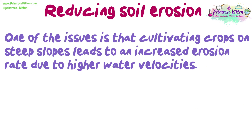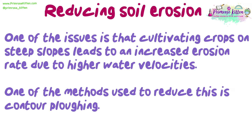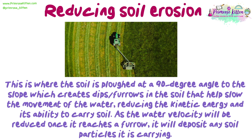One of the issues is that cultivating crops on steep slopes leads to an increased erosion rate due to higher water velocities. One method used to reduce this is called contour ploughing, where the soil is ploughed at a 90-degree angle to the slope. This creates dips and furrows in the soil that help slow the movement of water, reducing kinetic energy and its ability to carry soil. As the water velocity is reduced once it reaches a furrow, it will deposit any soil particles it is carrying.